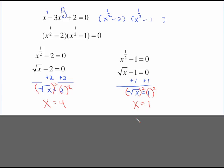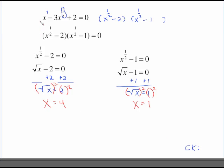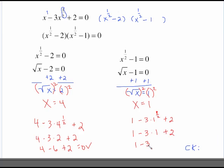We have two solutions here but we need to check. Plug 4 back in: 4 to the 1/2 minus 3 times 4 to the 1/2 plus 2. 4 to the 1/2 is the square root of 4, which is 2. So this is 4 minus 3 times 2 plus 2, which is 4 minus 6 plus 2, which gives 0. That one checks. Same with 1: 1 minus 3 times 1 to the 1/2 plus 2. The square root of 1 is 1, so this is 3 times 1, which is 3. That gives us 0. Both of these are solutions.